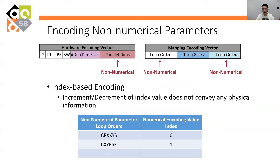However, there are non-numerical design parameters in our search space, including parallel dimension selection and loop ordering. During the experiment, we found that using an index to directly encode the parallel dimensions and loop orders does not work well, because the increment and decrement of the indexes does not convey any physical information. To solve this problem, we propose the importance-based encoding method.